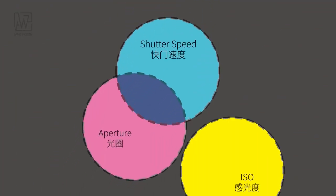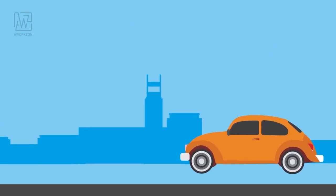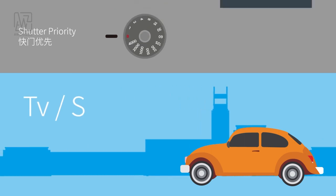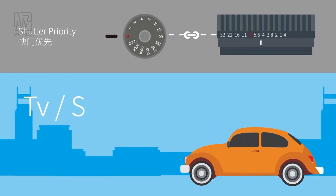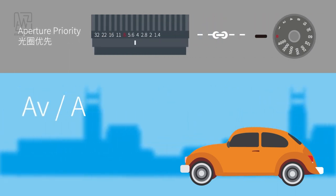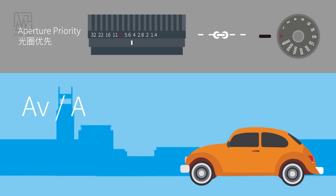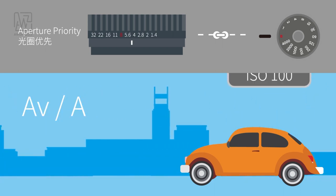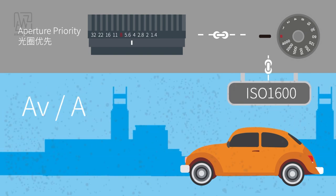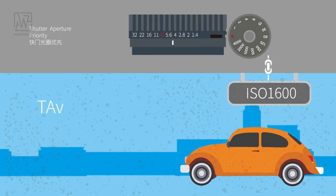Shutter speed, aperture, and ISO jointly affect the result. For a photo with proper exposure of a moving object, decide the shutter speed first, then the aperture — this is called shutter priority. If you want a background-blurred photo, decide the aperture first, then the shutter speed — this is called aperture priority. In extreme conditions where the combination of shutter speed and aperture can't achieve ideal exposure, you can adjust the ISO, which may sacrifice the photo's sharpness.